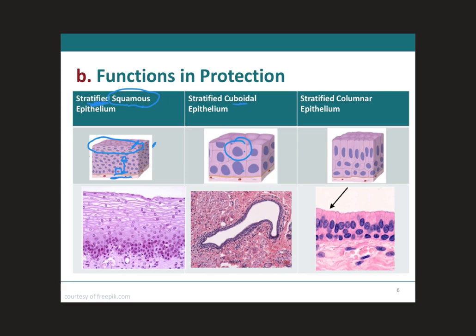Next, we have the stratified columnar epithelium. Usually the basal cells are going to be shortened and irregular in shape. Only the apical layer will have cells that are columnar in shape or rectangular. Similar to the stratified cuboidal epithelium, the stratified columnar epithelium is also relatively rare. They're going to be located in part of the urethra, large excretory ducts of some glands such as esophageal glands, small areas in the anal mucous membrane, and also in part of the eye. The main function is protection.